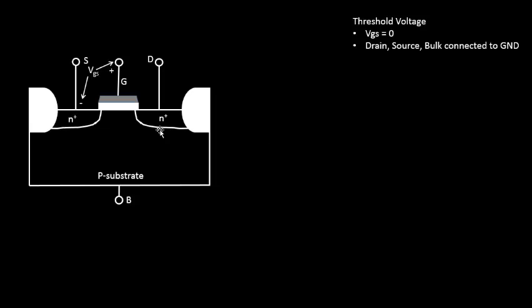Before connecting them, observe that this area is an N-plus region and a P-type substrate joined together. This reminds us of a very famous device — the PN junction diode. You must have learned about the PN junction diode; if not, we'll cover it in a separate set of videos. So the P-type substrate and the N-plus diffusion region together form a PN junction diode.